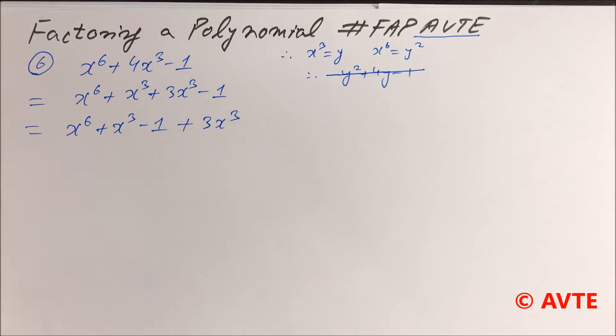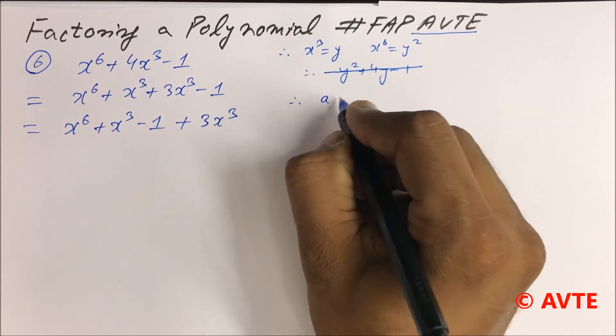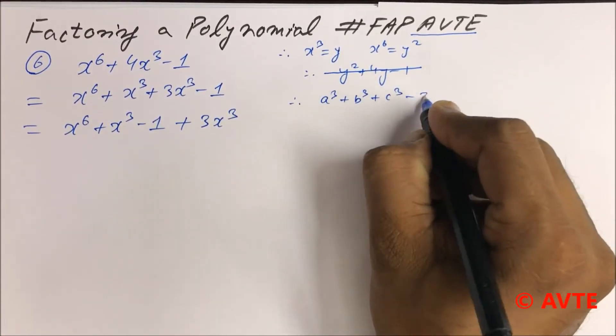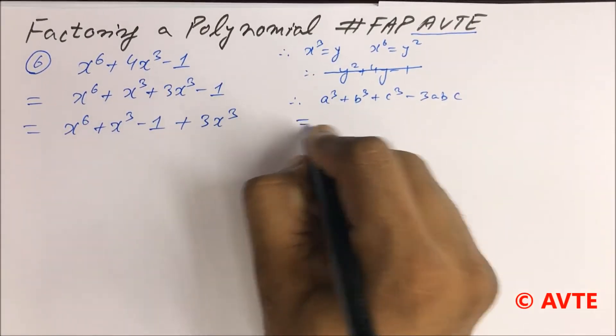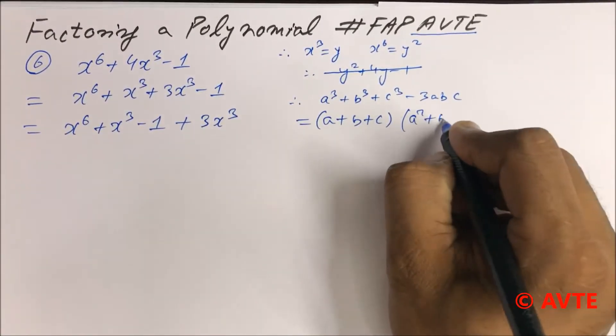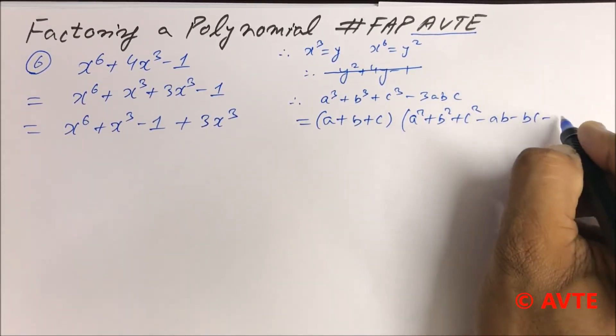We have done many questions on splitting, so we split 4x cube to x cube plus 3x cube. Now it becomes a formula: a cube plus b cube plus c cube minus 3abc as a plus b plus c times a square plus b square plus c square minus ab minus bc minus ca.